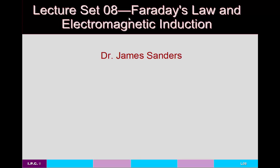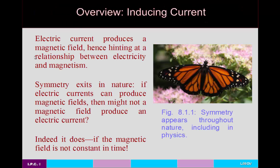We'll also look at Lenz's Law, which is sort of a part of Faraday's Law. The basic idea behind this set of lectures is that we've so far talked about how charges which are in motion — that is, a current — will produce a magnetic field. The point of today's lecture is sort of the opposite: a magnetic field can be used to induce a current, and this is a kind of symmetry which appears throughout nature.